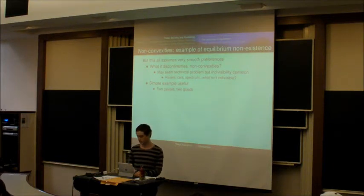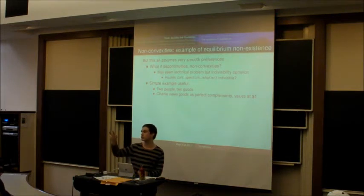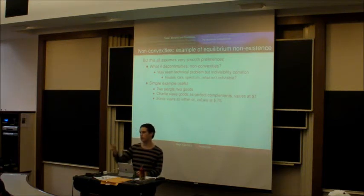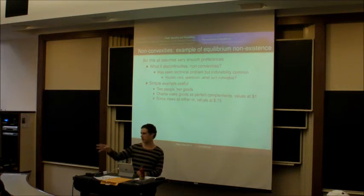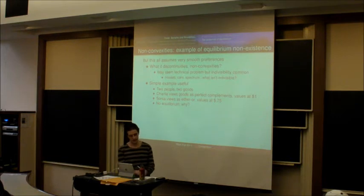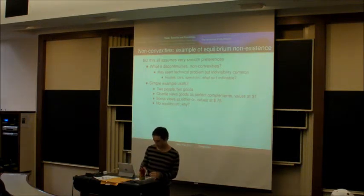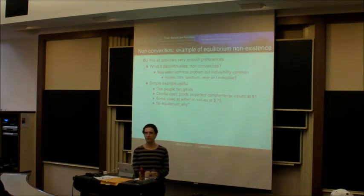So to just give you an example of the problems that the theory has when there's indivisibilities, let's consider the example that was in your reading. So there are two people and two goods. Charlie is the first person, and he views the two goods as perfect complements for one another, and values each at one dollar. Sorry, values the two together at one dollar, right? Sonia has either or preferences. She wants one or the other, and once she has one, she doesn't care about getting the other. And she values getting at least one of them at 75 cents. So there's no equilibrium in this economy. And Seung-ho? Is Seung-ho here? No, Seung-ho is not here.